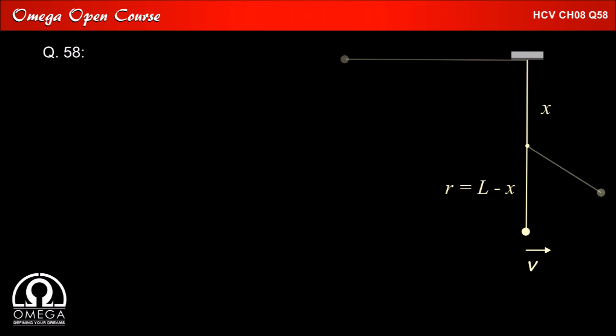For the third part of the question let us assume that the speed of the bob at the lowest point is v. Since at the lowest point bob has descended by distance L from its initial position its kinetic energy half mv squared must be equal to change in its potential energy that is mg L.